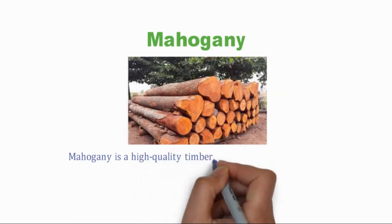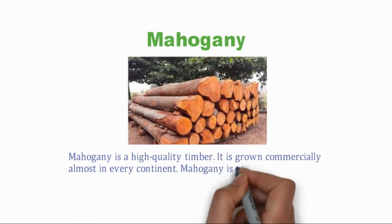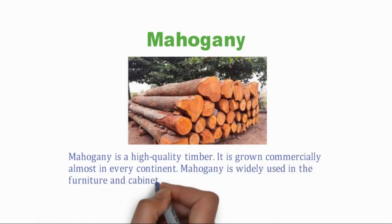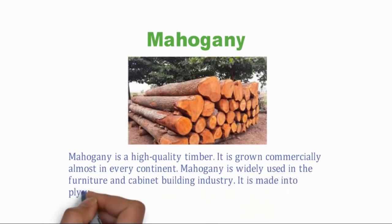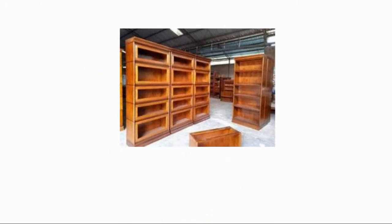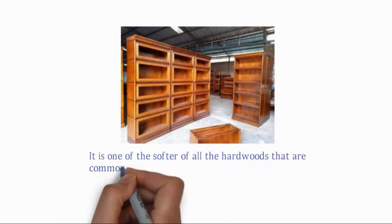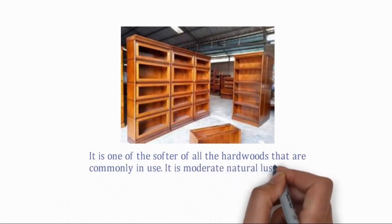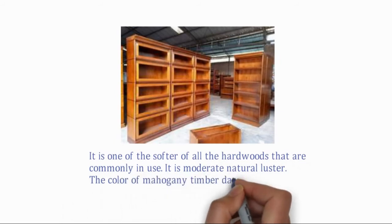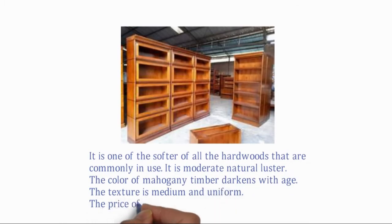Mahogany is a high-quality timber grown commercially on almost every continent. It is widely used in the furniture and cabinet-building industry, made into plywood and all kinds of trim. Mahogany displays hard grain and is one of the softer of all hardwoods commonly in use. It has moderate natural luster, and its color darkens with age. The texture is medium and uniform, and the price of this timber is in the mid-range.